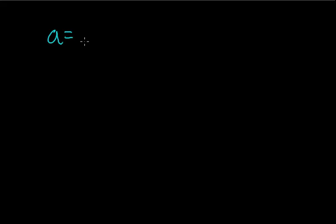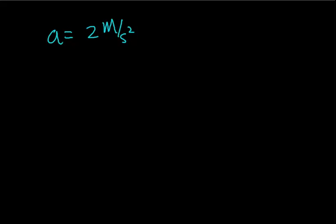In the previous video, we began to develop an intuitive understanding of what acceleration is. One of the examples we brought up was an object accelerating at 2 meters per second per second, or 2 meters per second squared. In both of those examples, we used an initial velocity of 0 meters per second. In this video, I'd like to develop an intuitive understanding of how velocity changes if an object is speeding up or slowing down with an initial velocity other than 0 meters per second.